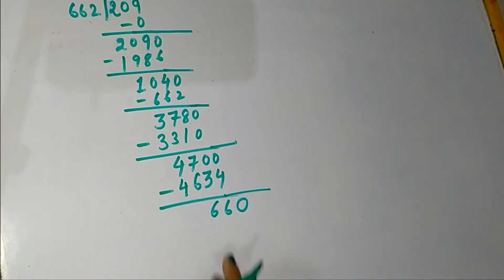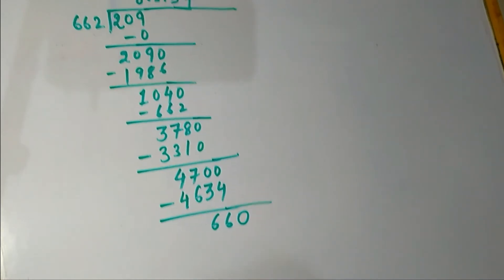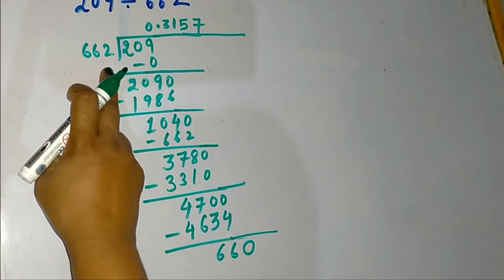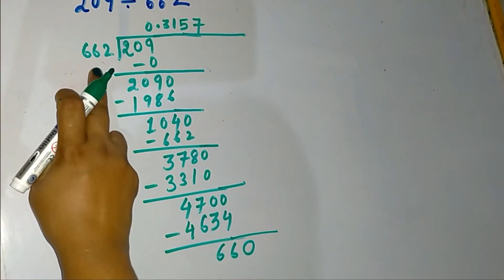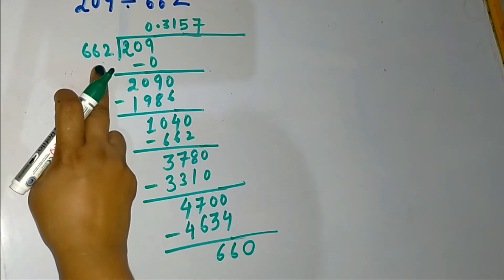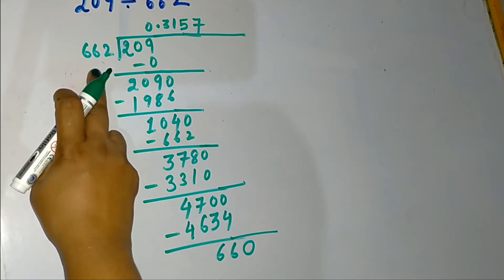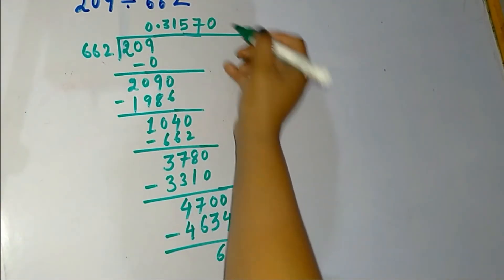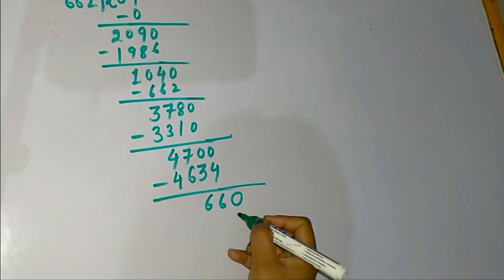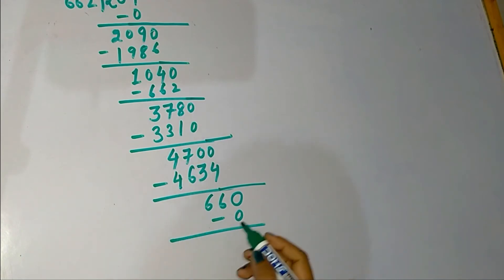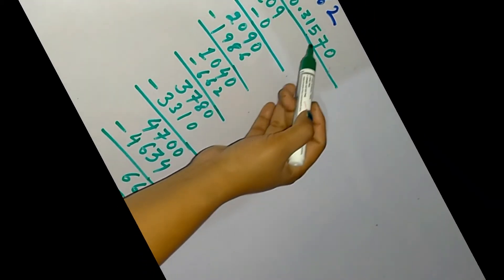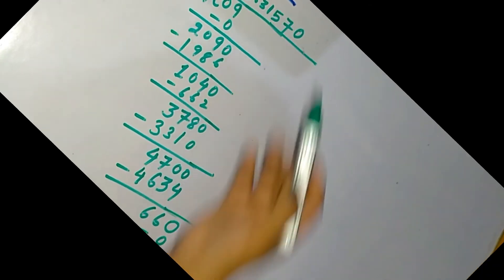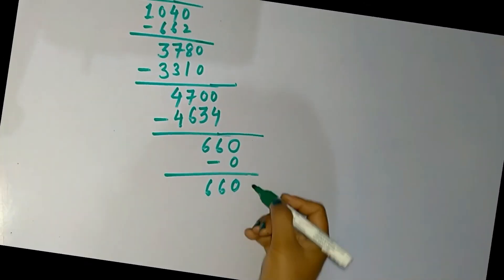Now we have 660, which is less than 662. So we need to go for the 0 times 662 term. Let's write down 0 here and subtract 0, giving us 660 back. Due to this decimal point, we are allowed to put one zero here.